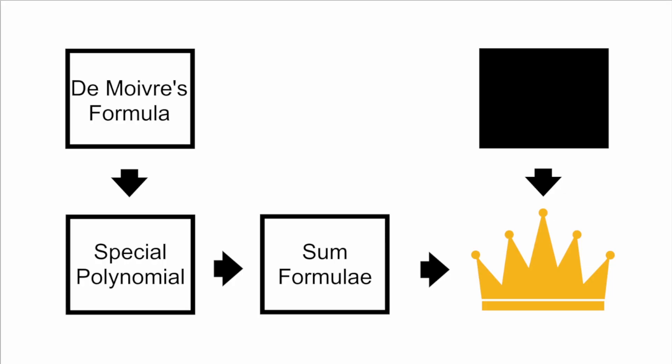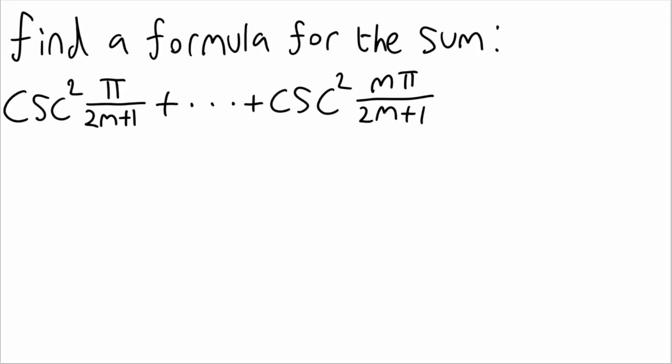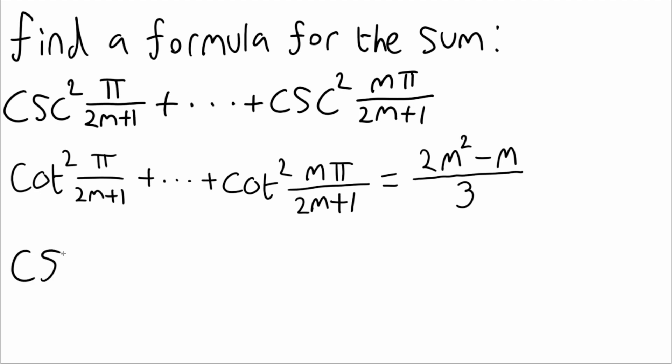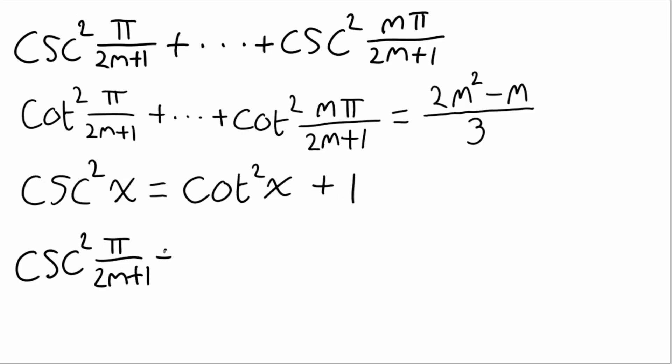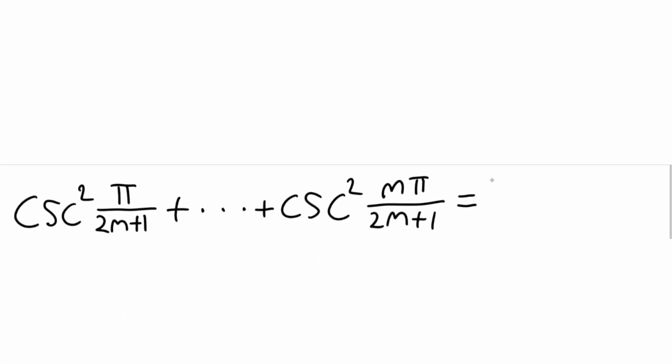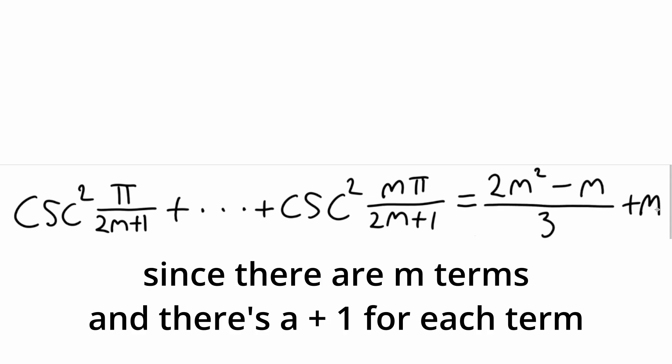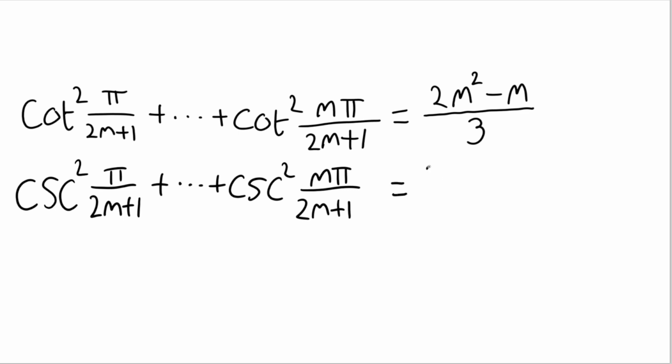You may have noticed, though, when I introduced this section that I used the plural, formulae. There's a whole other sum formula that we need. But don't fret, it's just the cosecant version of the cotangent sum we already found. And luckily, there's a handy little trig identity that will make this very easy. Every cosecant term in this new sum corresponds to a cotangent term in the old sum with an additional plus 1. That means that the cosecant sum formula is the cotangent sum formula plus m. So in the end, we're able to write it as 2m squared plus 2m over 3.